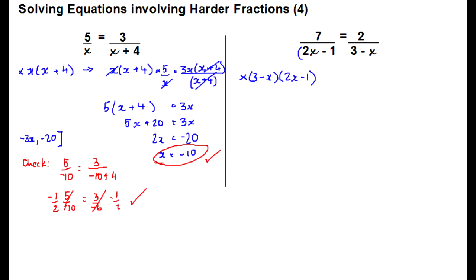And that's the pattern. That's what's going to happen. That 2x minus 1 is going to move up to be multiplied by the 2 on the right-hand side. And the 3 minus x from the bottom right is going to move up and multiply the 7 on the left-hand side. So we get 7 into 3 minus x equals 2 into 2x minus 1.